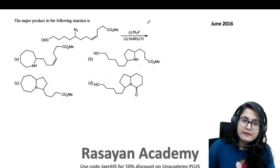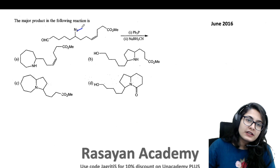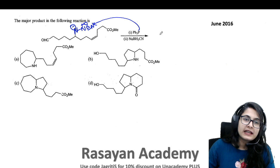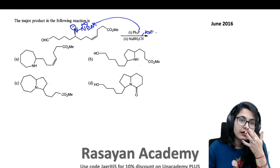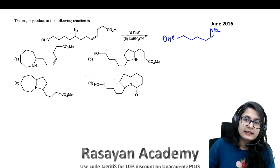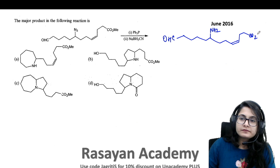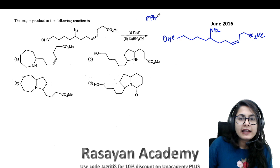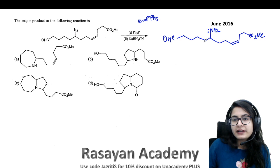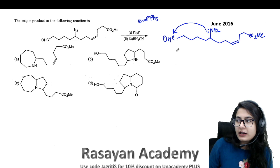Since you have already understood the Staudinger reduction, you can directly imagine from here — you don't have to write the whole mechanism. The phosphine is going to attack over the nitrogen, form a four-membered intermediate, and after that there will be water, giving complete reduction to the amine. Let me write the product of the first step directly. The phosphine is eliminated as phosphine oxide, as you have already seen. Now there could be an intramolecular attack of the amine on a more electrophilic carbon.